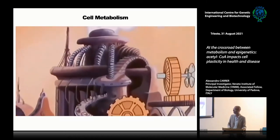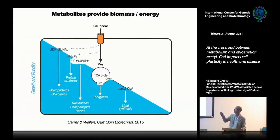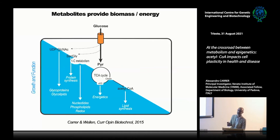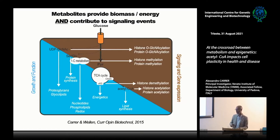Metabolism is a source of energy and biomass to support cell growth and function. Products of cell metabolism are really crucial components of cellular architecture — building blocks for every structure in the cell — or energy equivalents necessary for carrying out different functions. But as always in biology, things are not so simple. We've demonstrated in recent years that metabolites also influence signaling events, largely because several metabolites are cofactors or substrates for chromatin remodeling enzymes that influence chromatin architecture and gene expression.